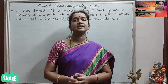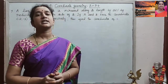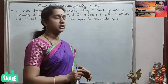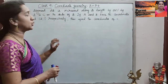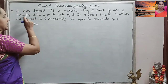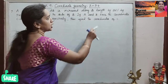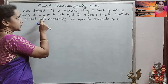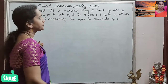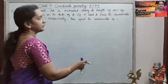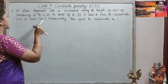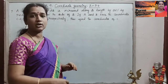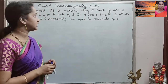Good morning students. In this class I will be doing class 9 Samacheer Kalvi syllabus or Matriculation syllabus, the chapter Coordinate Geometry, Exercise 5.4, 7th sub. A line segment AB is increased along its length by 25% by producing it to C on the side of B. If A and B have the coordinates given respectively, then find the coordinates of C. This is the information given.